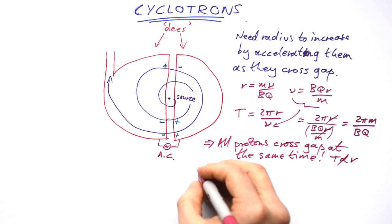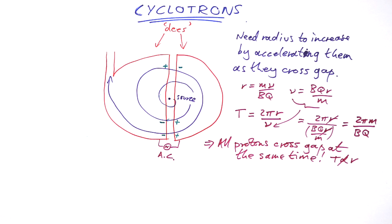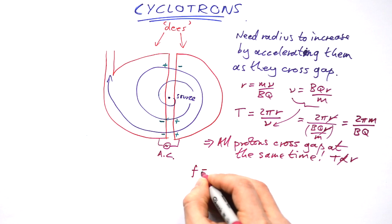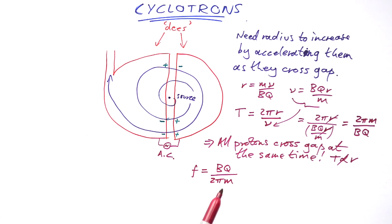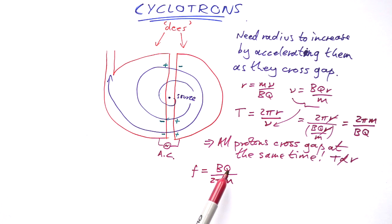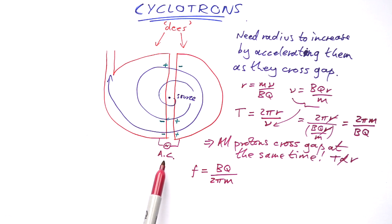The frequency of the AC applied to the Dees is just the reciprocal of the time period: f = BQ/2πM. If you know the mass of the protons — approximately 1.67 × 10⁻²⁷ kg — and the charge — 1.6 × 10⁻¹⁹ C — and you know the magnetic flux density, you can set the correct frequency for the AC supply to the Dees. So that's free moving charged particles in magnetic fields, and that's the motor effect done.